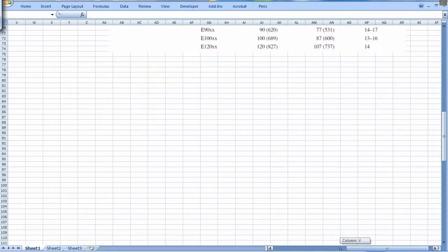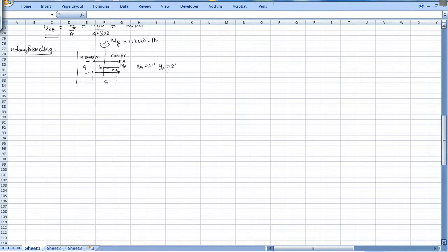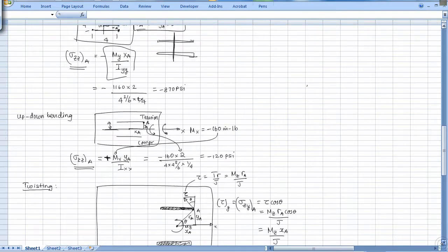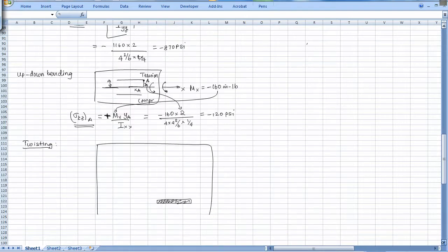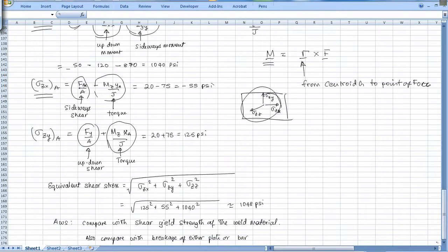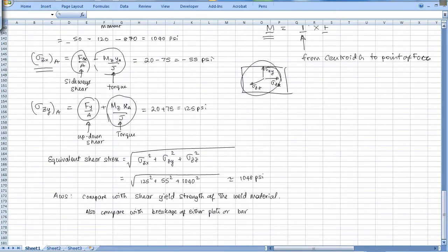Our failure criteria is the following: Safety is determined by equivalent shear stress, which must be less than or equal to shear yield stress divided by 2 for weld.